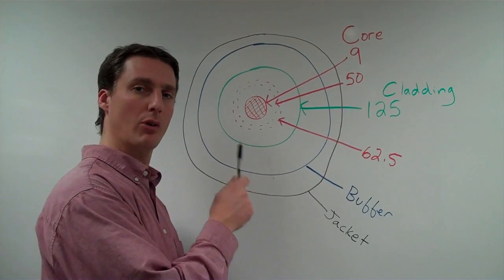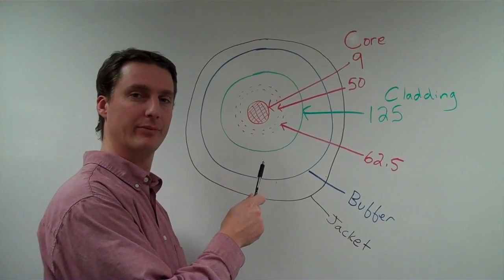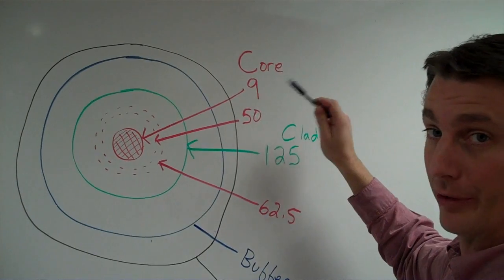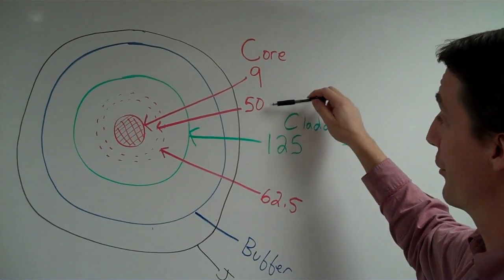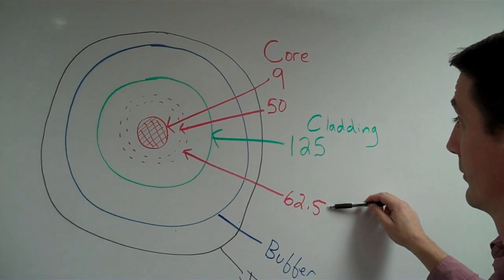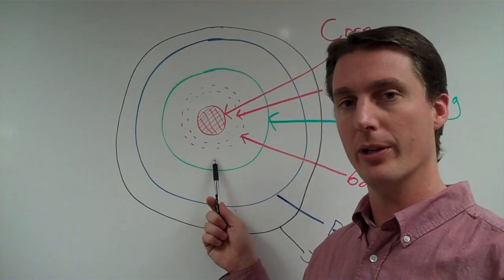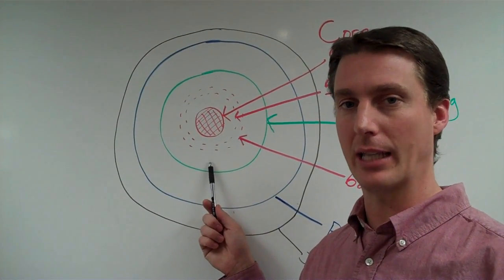I quickly drew a cross section of a fiber cable to help explain all this. The red represents the core, and that's where you see your three measurements. The core is made of step index graded glass.